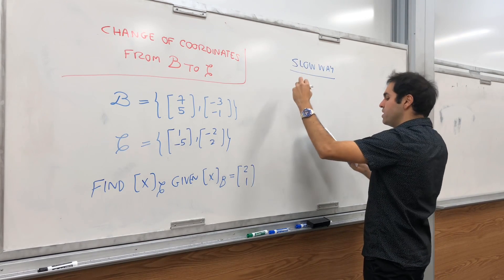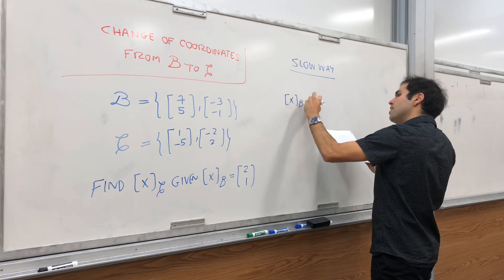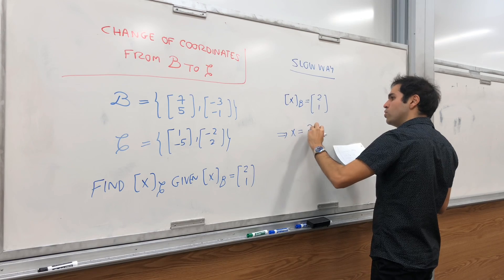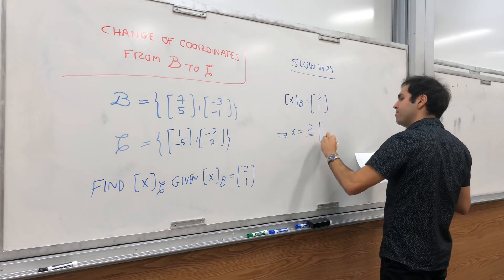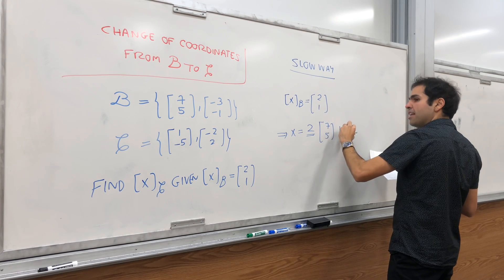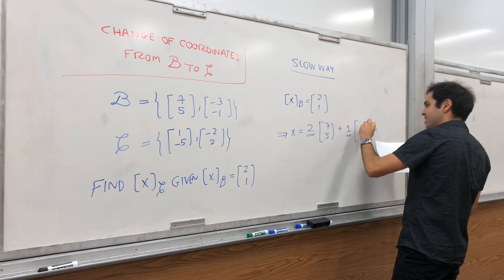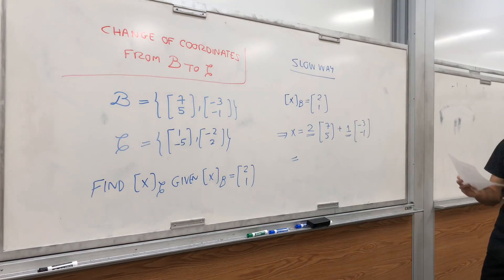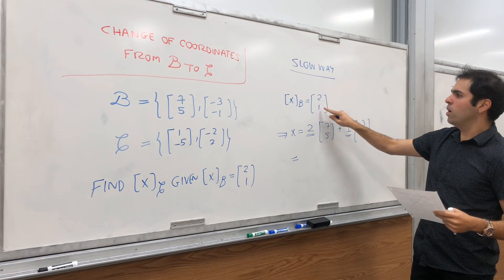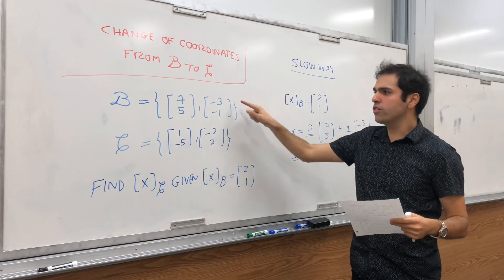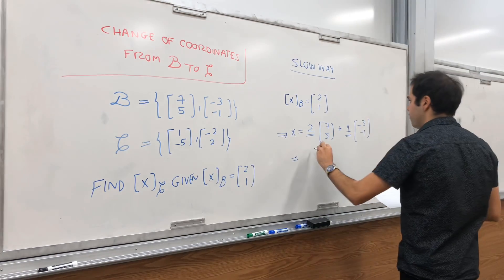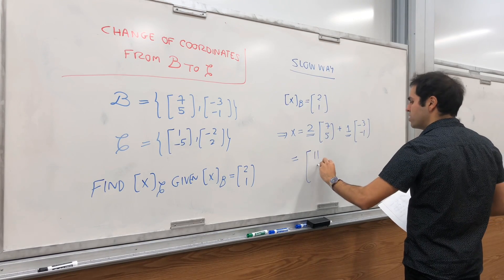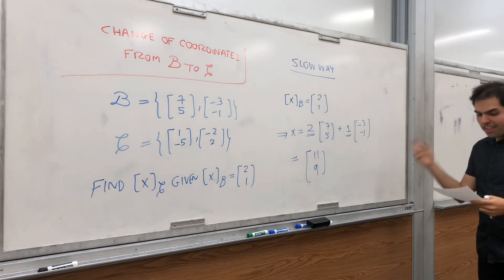It's slow, but I think very intuitive. What does it mean for XB to be 2, 1? That just means that in order to get X, you'd go two steps in the first direction, 7, 5, and then one step in the second direction, minus 3, minus 1. That's just a definition of coordinates. XB being 2, 1 means you do two times the first vector plus one times the second vector. And if you do that, you get 14 minus 3, which is 11, and 10 minus 1, which is 9. So, 11 and 9.